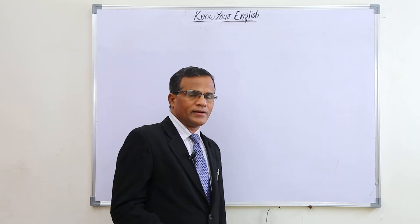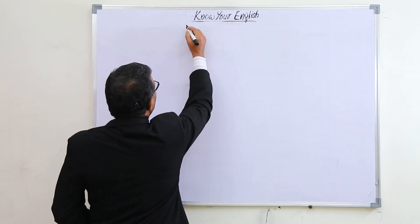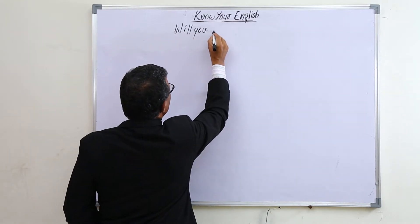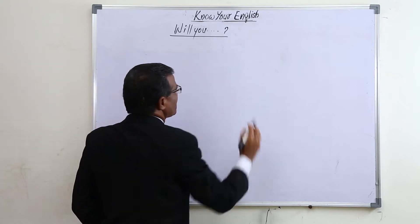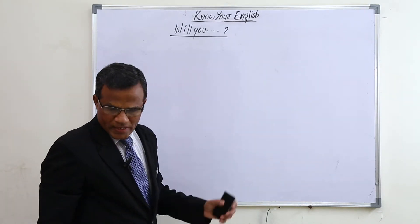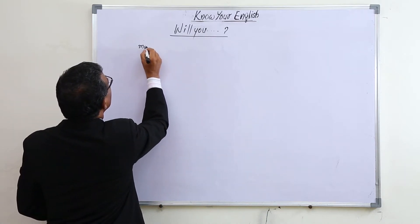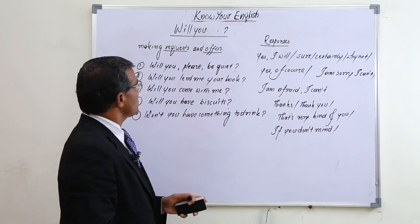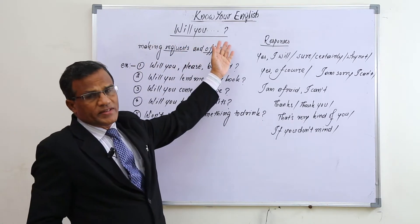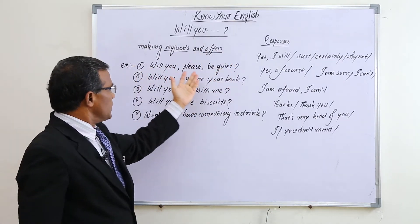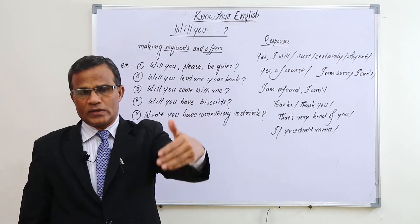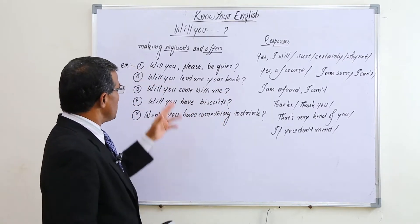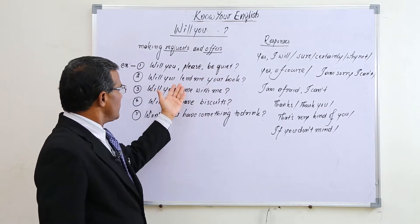First, let me teach you 'will you.' 'Will you' is a question form which is used especially for making requests and offers. For example: 'Will you please be quiet?' — we are requesting a person who is near us to be quiet, asking them to keep quiet.